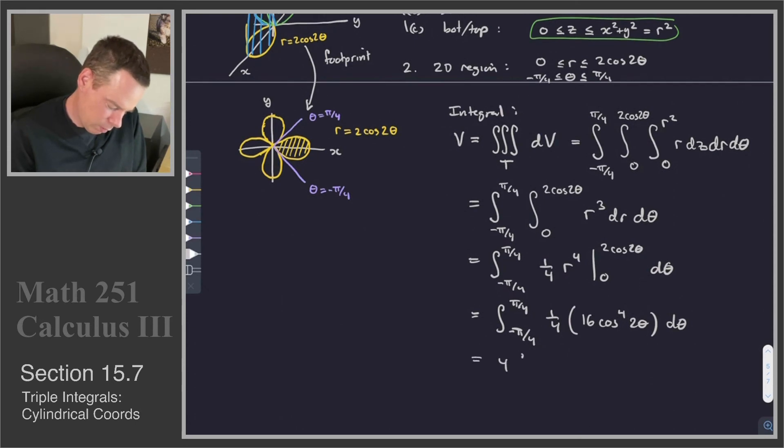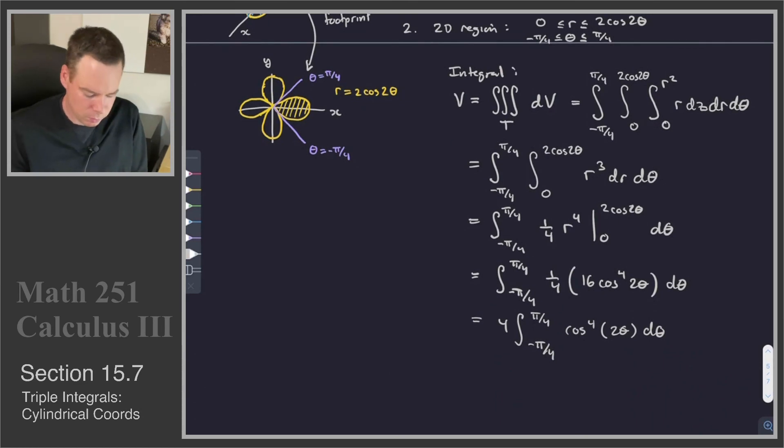And then this becomes the integral from negative pi by 4 to pi by 4 of cos to the fourth of 2 theta d theta. So we've basically boiled our integral down to just this single integral of a single variable. Now this one's a little bit challenging because it's cos to the fourth of 2 theta. We can go ahead and start to apply identities. We try to reduce that power. Since it's cos to the fourth, we could try that. We also learned in calculus 1 a reduction formula for this. How to integrate any cos to the power of n by reducing it to a cosine of a power less than the power you're starting with. The important part is to notice that this is a challenging integral.